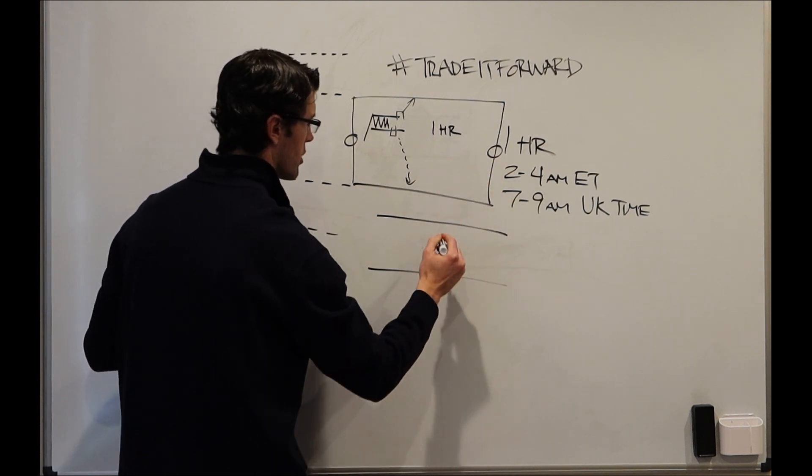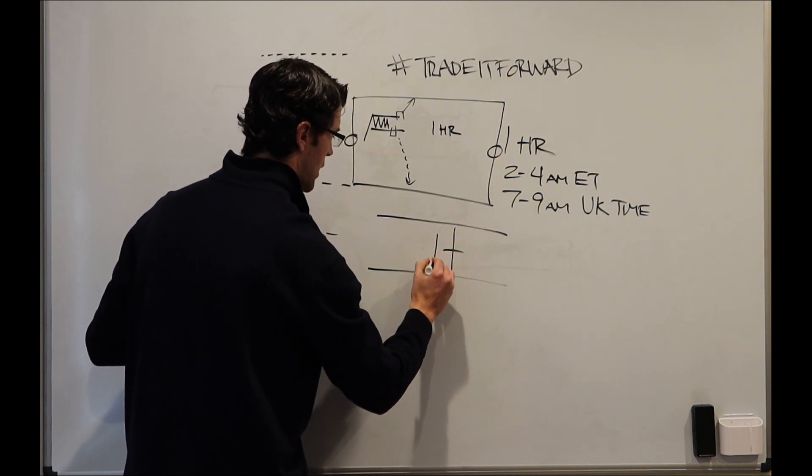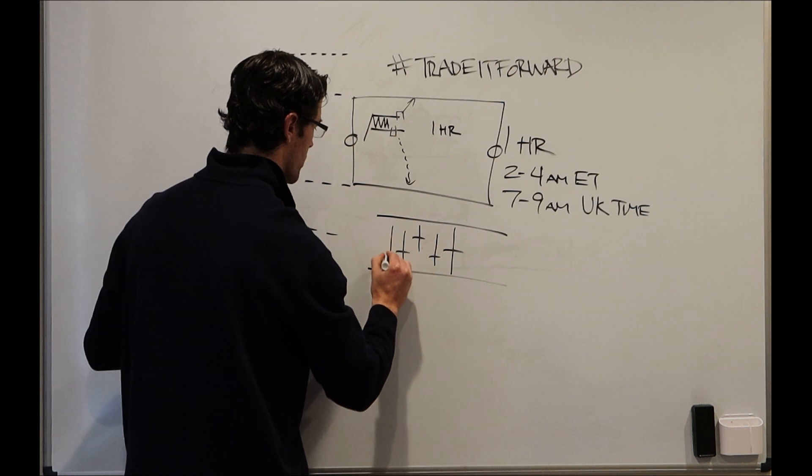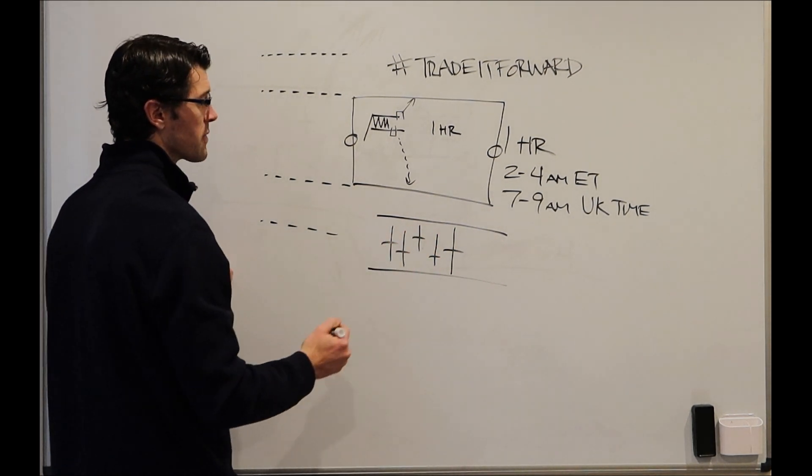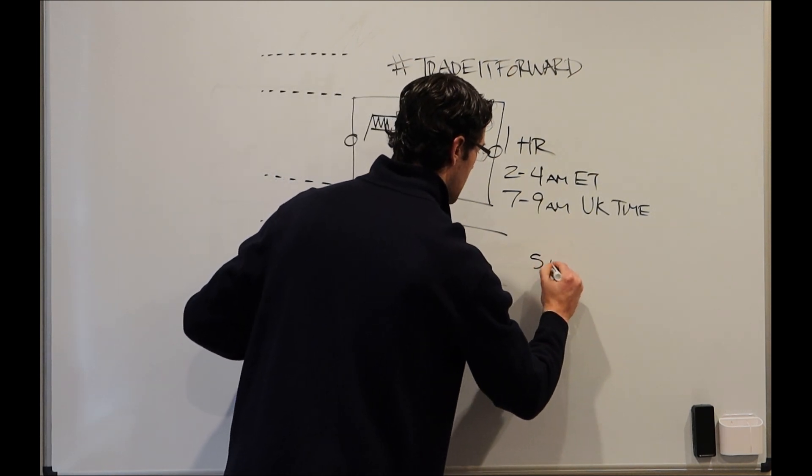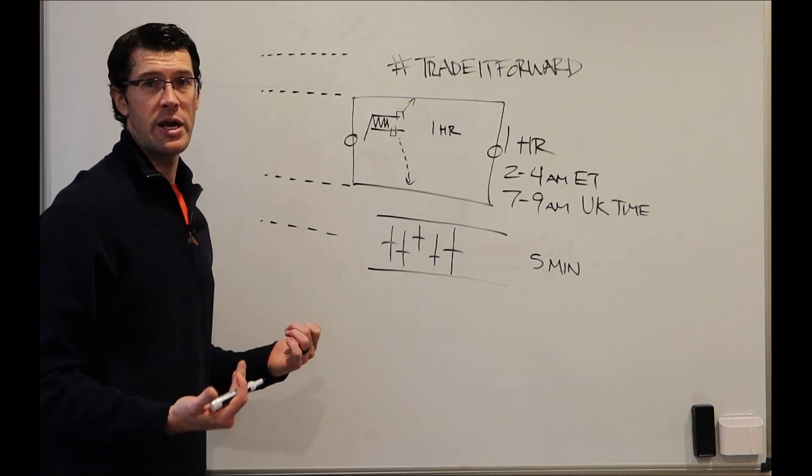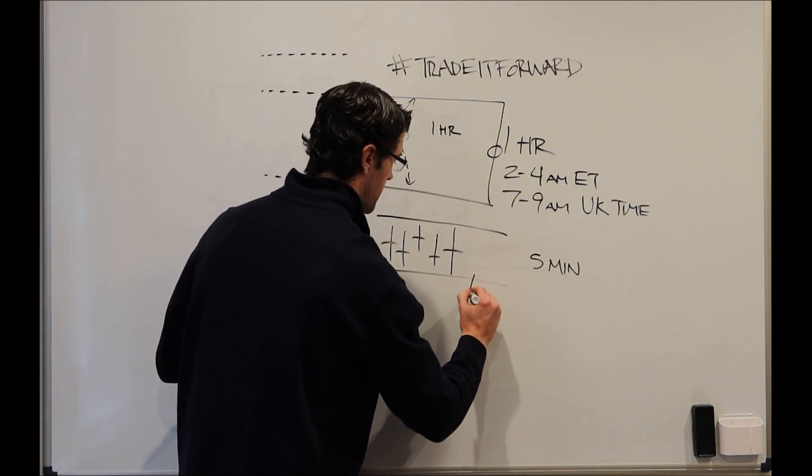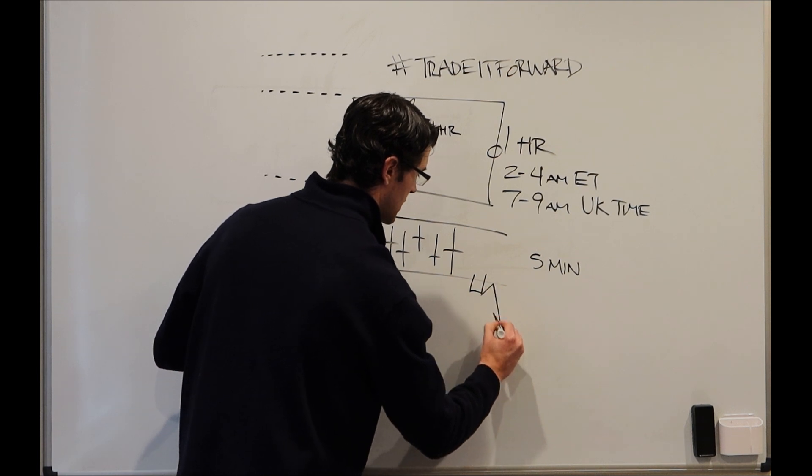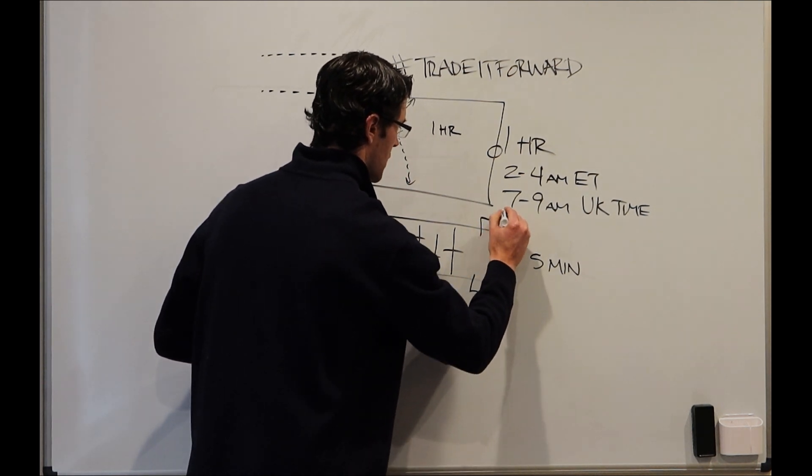What I'm looking for is on a one hour chart, let's say the candle looks like this. And we have all these indecision candles within a one hour chart. Maybe two to three hours, maybe two to four hours of indecision. I'm then looking at a five minute chart for confirmation and a breakout. So the one hour chart is my structure, the five minute chart is my confirmation for price to give us that break.